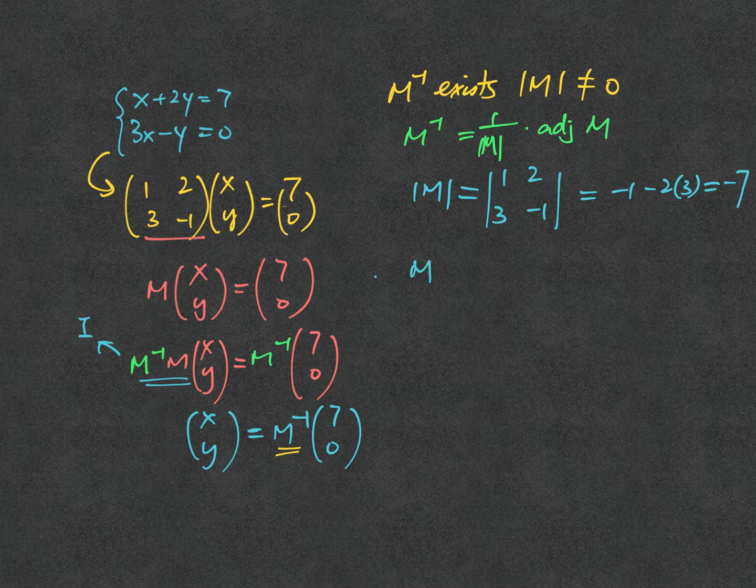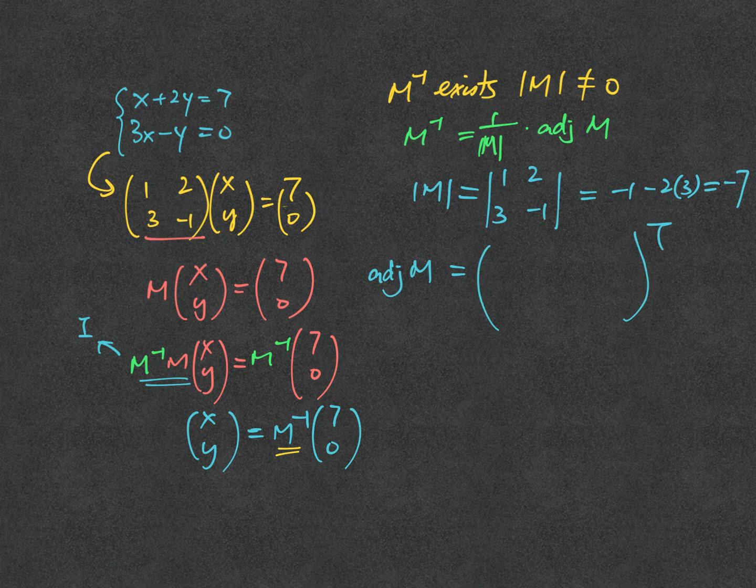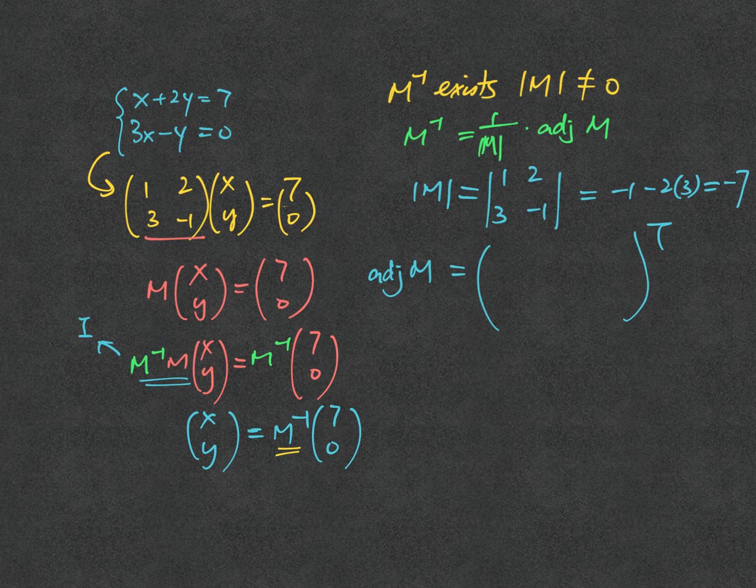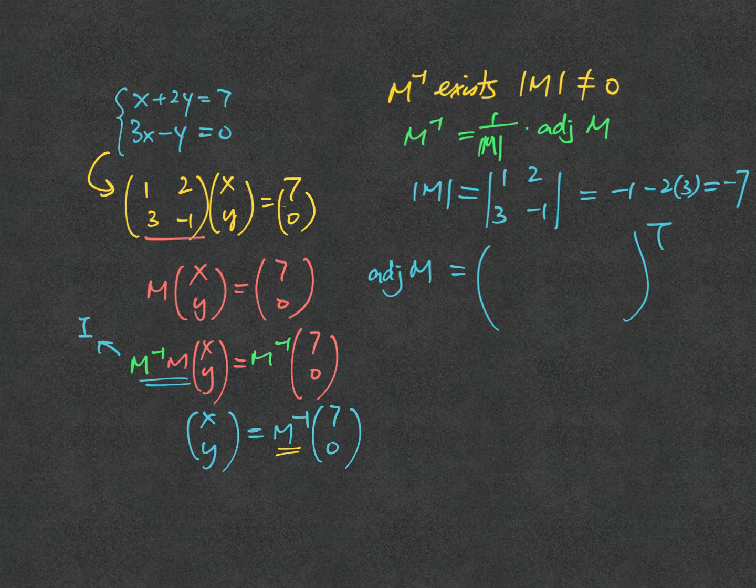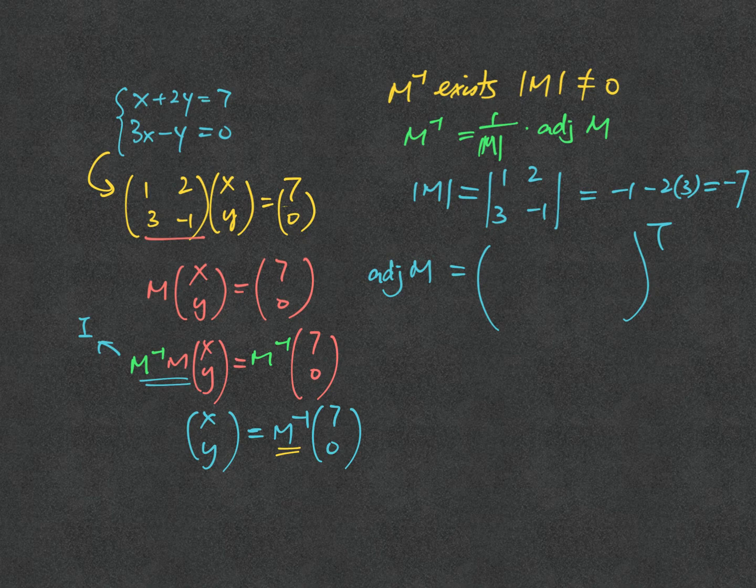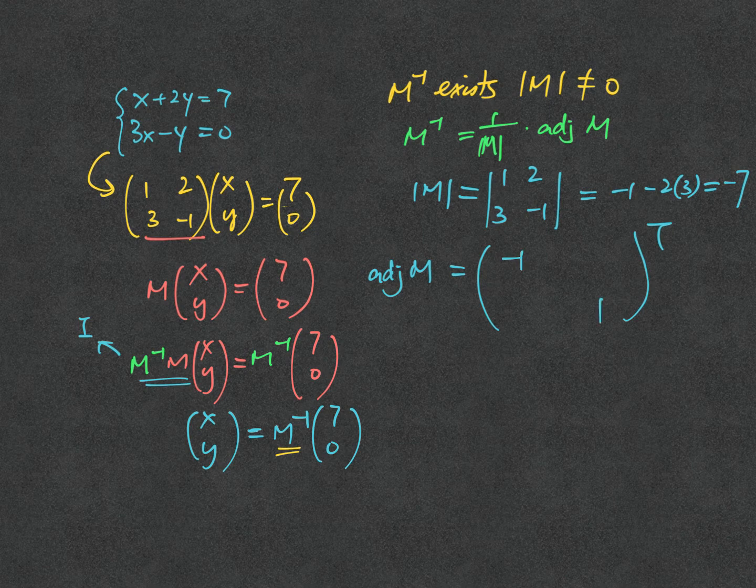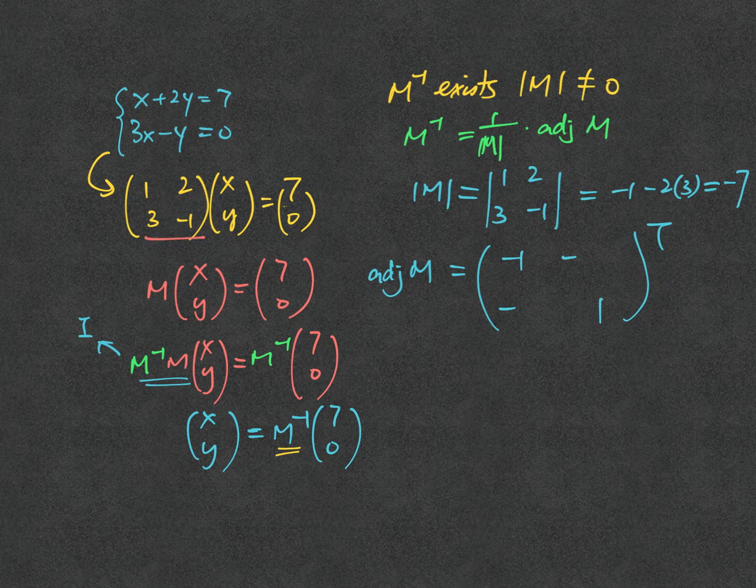While for adjoint of M, it composes of two parts: the first part would be the transpose outside, while the other part would be the cofactor inside. If you forget the way how to find the cofactor, please watch my last series of videos talking about matrix and determinants.